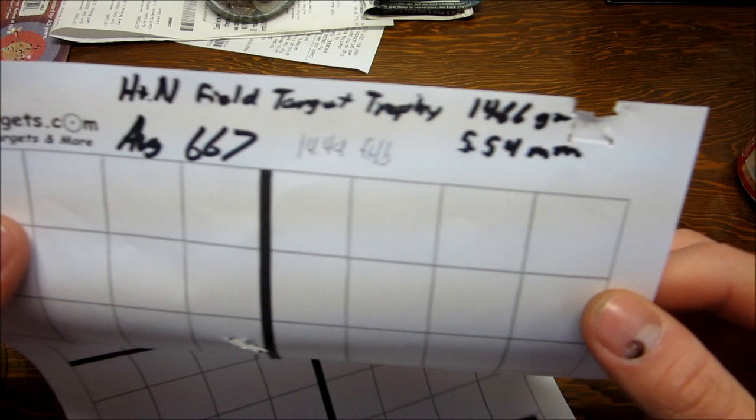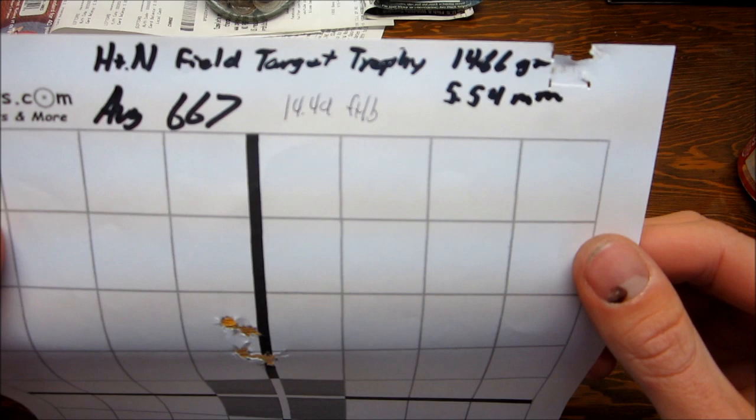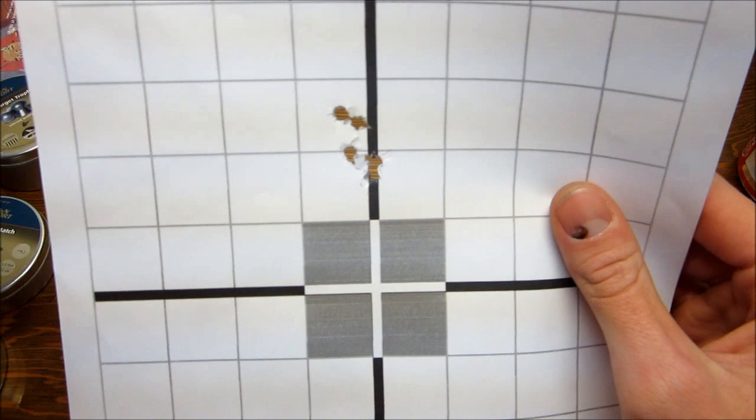And H&N Field Target Trophies, average 667 and 14.49 foot-pounds. These are the 5.54 millimeter ones. I think they offer them in three different sizes. But as you can see, those shot pretty good.